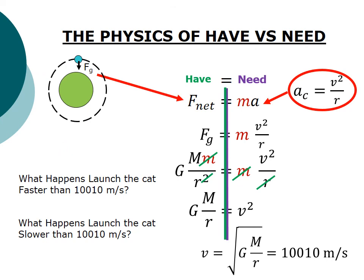Similarly, if you fire the cat too slowly, it does the opposite. Where what you need goes down, but you still have the same amount. And so it will try and decrease that radius and you'll spiral inwards, which means the cat will actually hit the earth most likely. That's it.